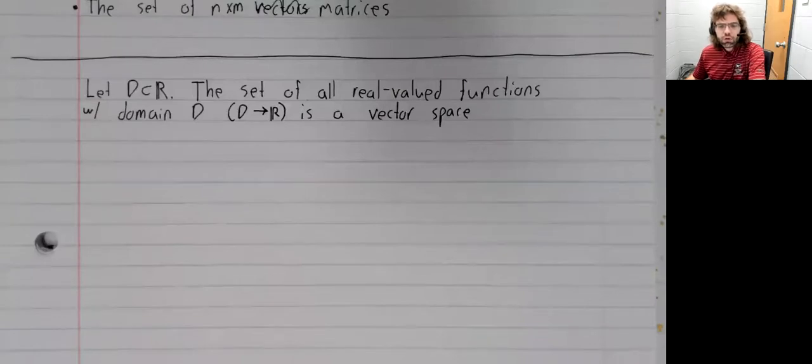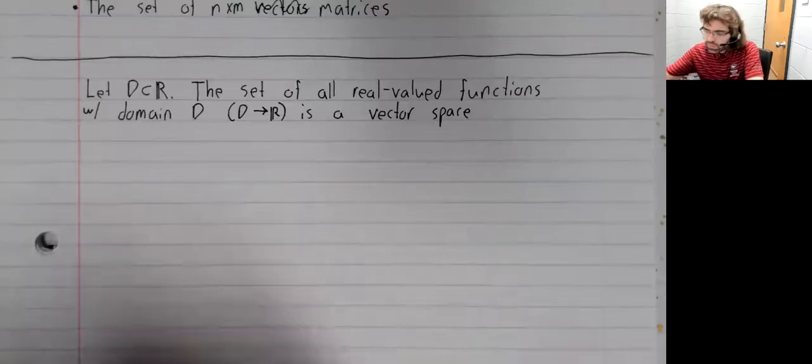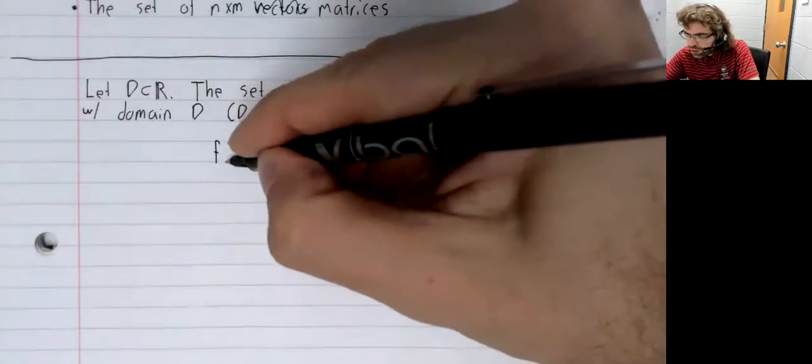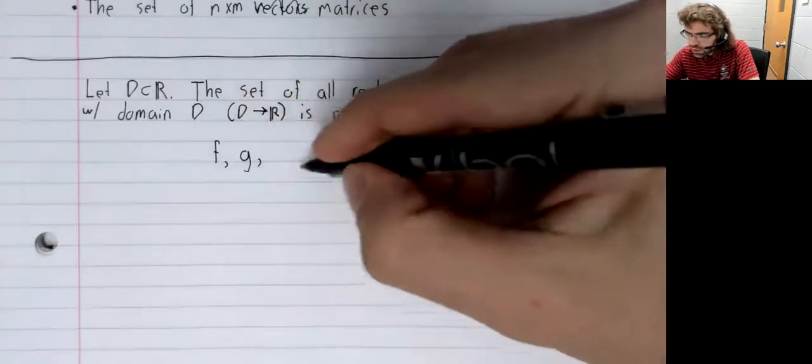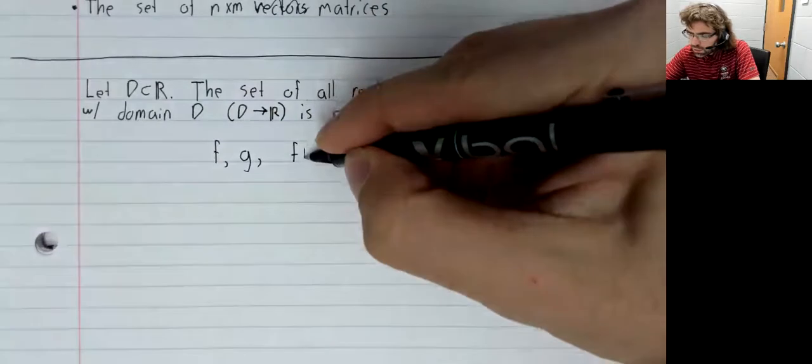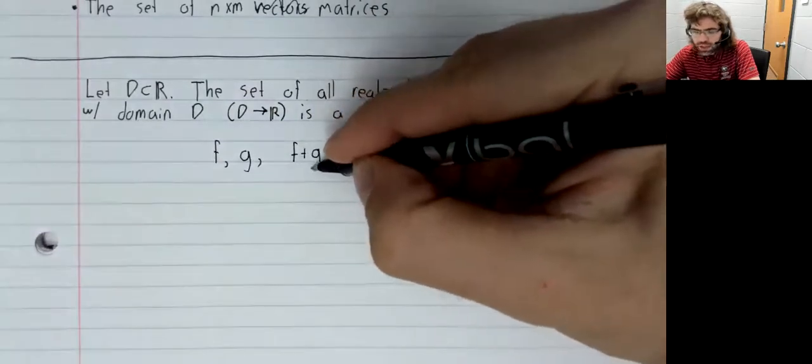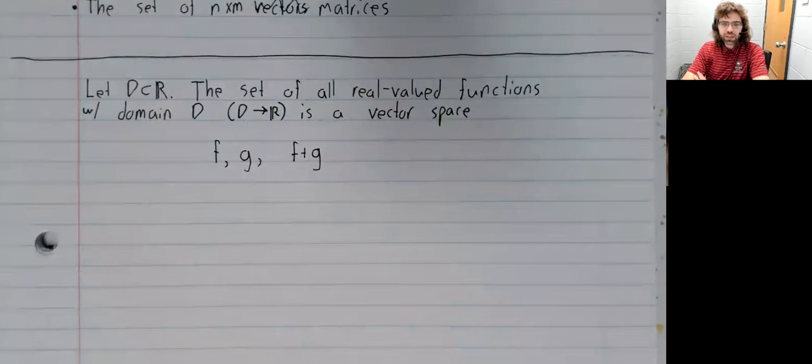The set of all real-valued functions with domain D, that is the set of all functions from D to R, is a vector space. If we have a function f and a function g, we can define a new function f+g.